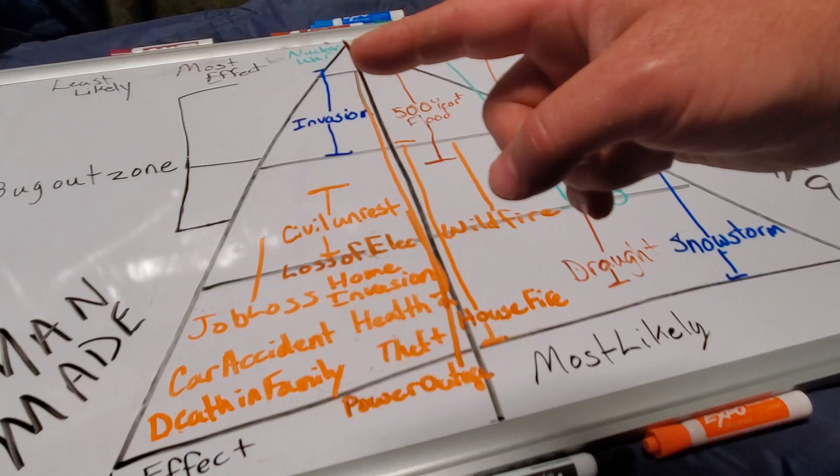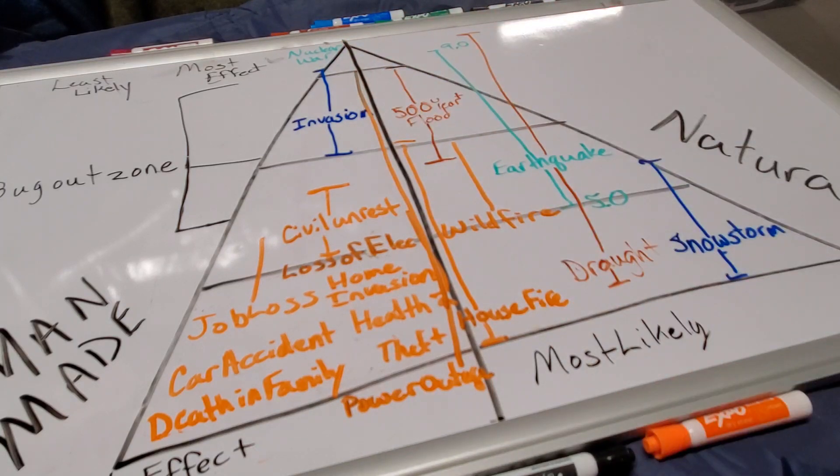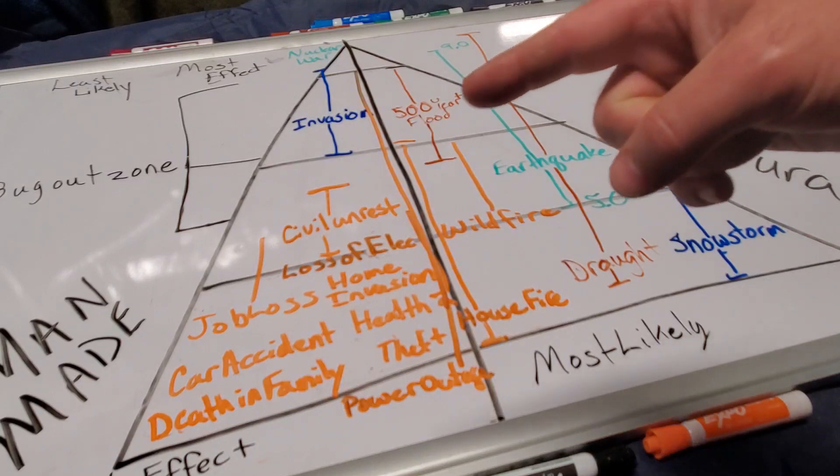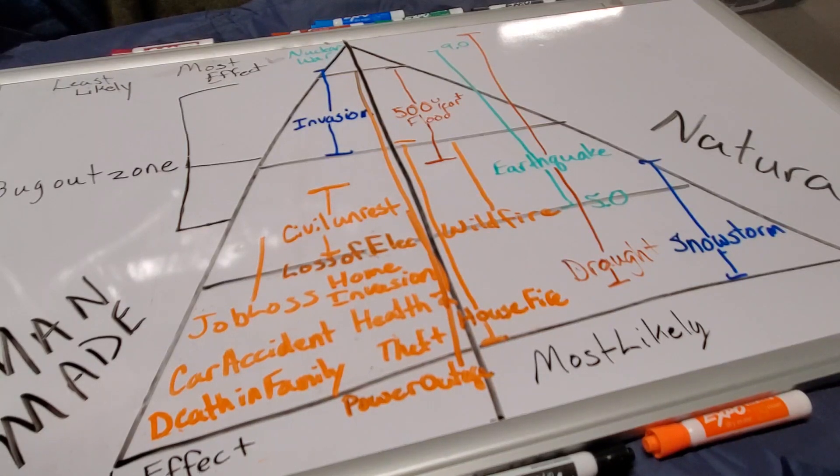Nuclear war - very top, tippy top of the pyramid there. Invasion, armed conflict if you wanted to label it like that, with the 500-year flood - very unlikely but would be a bug out scenario, potentially if nothing else, because everything else would be washed out around us. There wouldn't be much economic base if it was something that large.